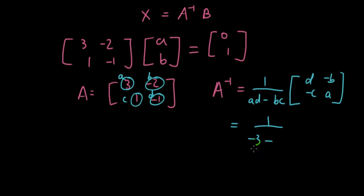3 times negative 1 is negative 3 minus b times c, so negative 2 times 1 is negative 2 multiplied by in the brackets a and d switched around so I have negative 1, 3, b and c turn into their negatives. So negative of negative 2 becomes positive 2, negative 1 here. And then 1 over negative 3 plus 2, so 1 over negative 1. So that's just basically just negative 1.